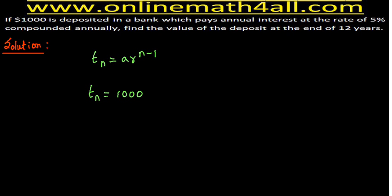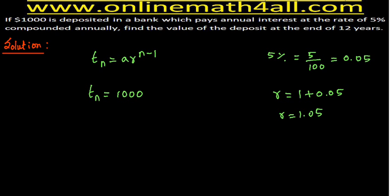In geometric sequence, R stands for common ratio. But when we do compound interest problems using geometric sequence, to get the value of R, we just add 1 to the decimal form of the given percentage. The given percentage is 5%, so the decimal form is 0.05. Therefore R = 1 + 0.05 = 1.05.